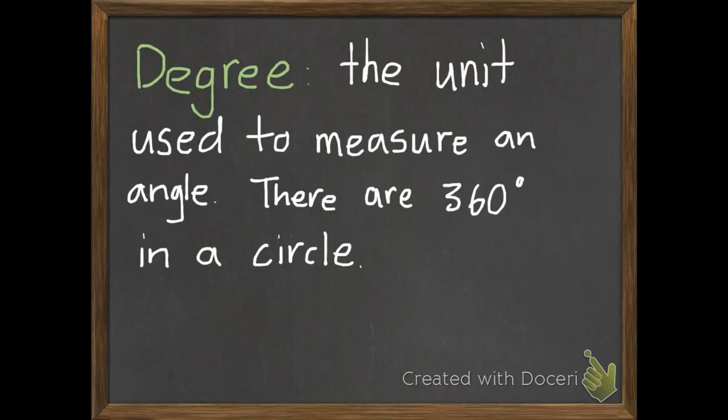So if we wanted to, we can actually draw 360 little lines throughout our circle, and each one of those little tiny lines would be one degree. So if we have a circle that is 90 degrees, that would be 90 of those one degrees all put together.